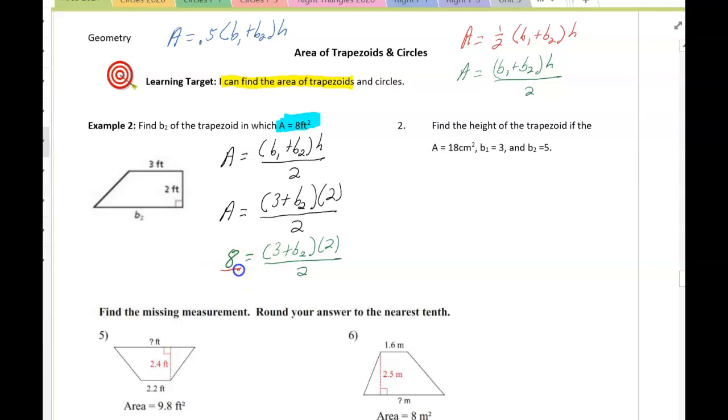I like to put this over 1 and cross-multiply. So I'm going to multiply the 8 and the 2, and then multiply 1 times the numerator. When I cross-multiply, 8 times 2 is 16. So 16 equals 3 plus b2 times 2. Then I'm going to distribute. So 16 equals 6 plus 2b. Subtract 6 from both sides. 10 equals 2b. Then divide by 2. So b equals 5, and since we're finding a dimension, it is 5 feet.